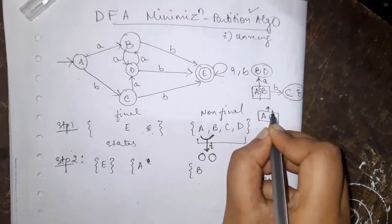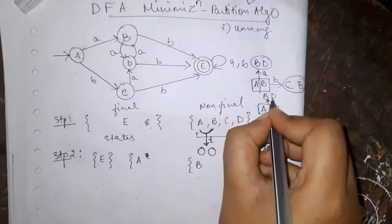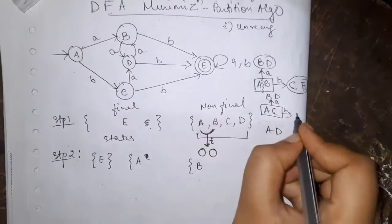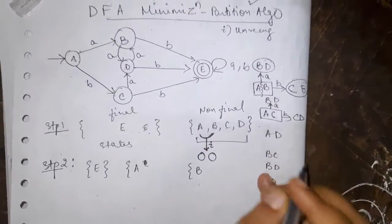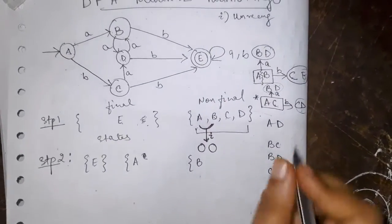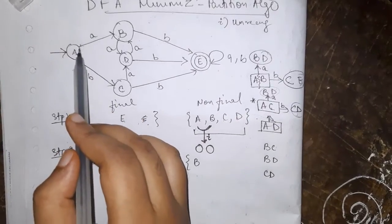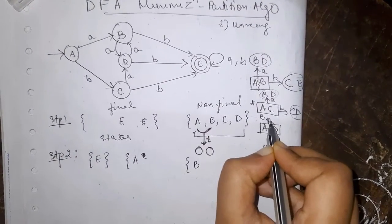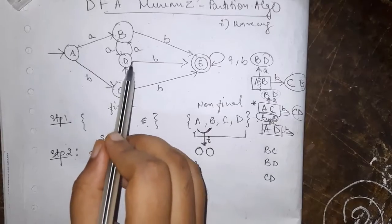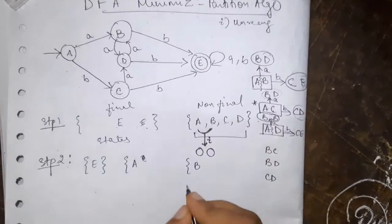A and C on giving A, A on A goes to B, C on A goes to D. A and C on giving B goes to C. C on A goes to D. We don't know till now if B D and C D are in the same group or not. So let's do for A D. A D on giving A goes to B. D on A goes to B. A D on giving B goes to C E. We are sure that C and E are not in the same group. Therefore A and D will be different.